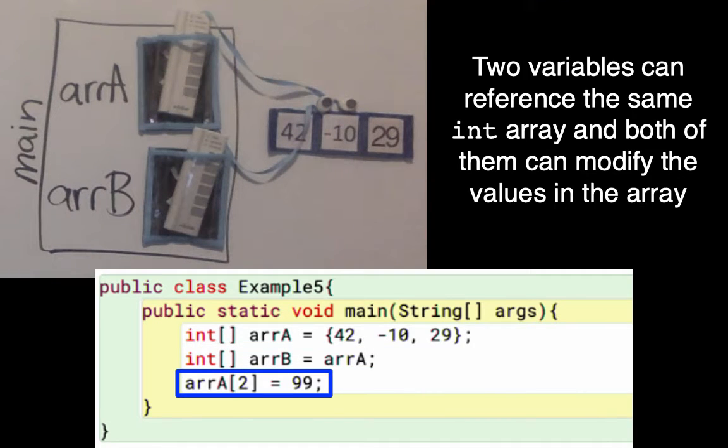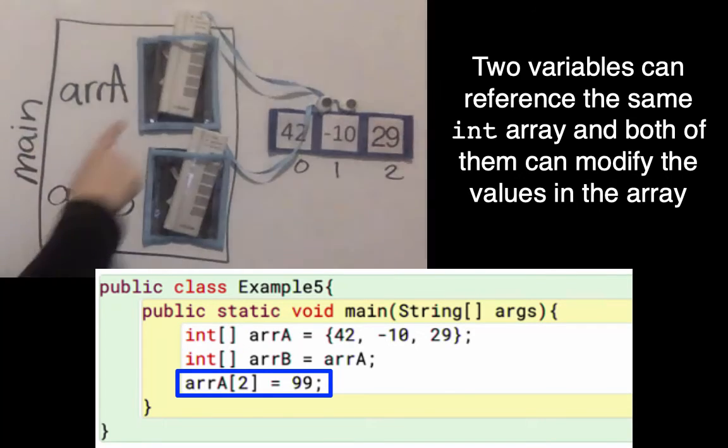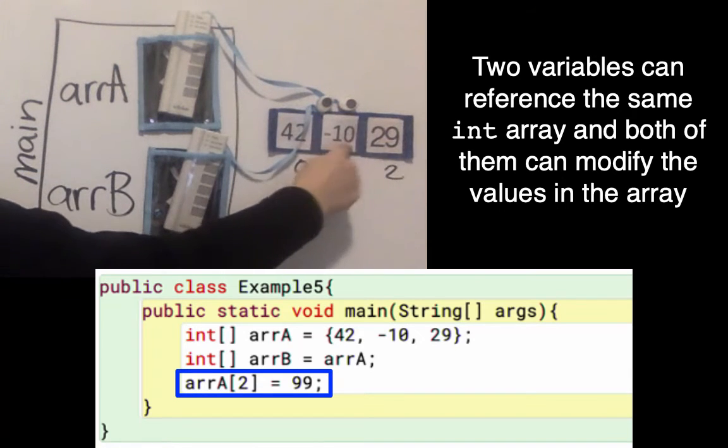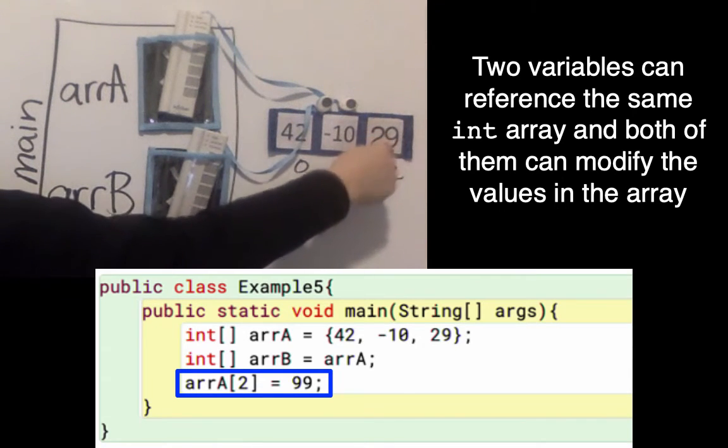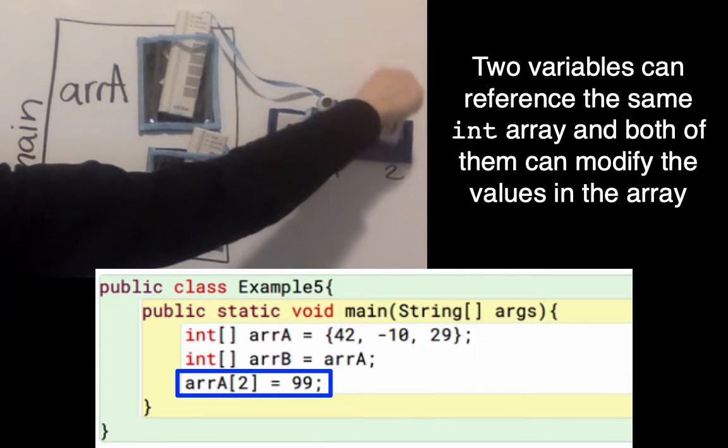My third line of code says arrA at index 2 gets the value 99. I'll label my indices: zero, one, two. To assign a value, I follow the reference from arrA, and I say index two is going to get 99. That value will change and will be 99.